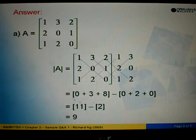So next step is to simplify. We have 0 plus 3 plus 8 equals 11. And then 0 plus 2 plus 0 equals 2. So from here, 11 minus 2, the answer is 9. Therefore, the determinant of this 3 by 3 matrix equals 9.